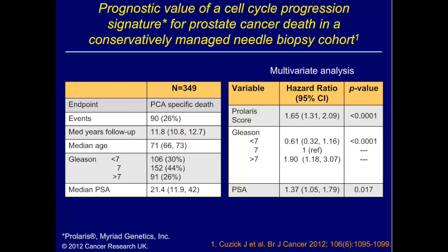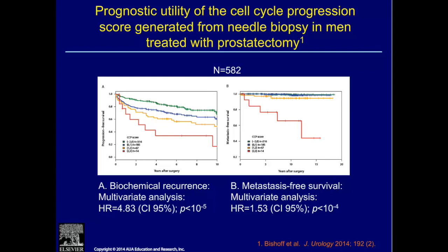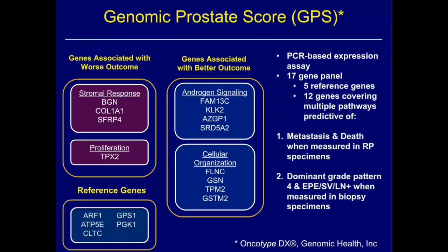One example is the Prolaris test, which looks at a cell cycle progression (CCP) score — a gene expression array measuring the mRNA expression of 31 genes associated with the cell cycle relative to 15 normalized reference genes. In their validation study on needle biopsy, they looked at almost 350 patients in a conservatively treated cohort in England. The Prolaris score was highly independently prognostic of mortality within the 10-year period.